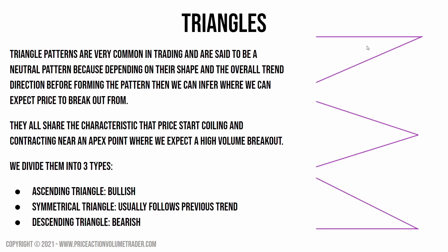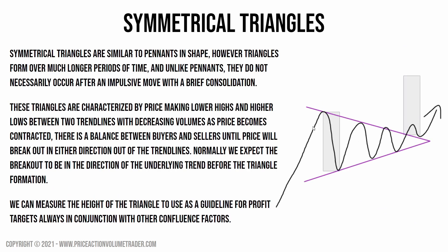The ascending triangle is bullish — price is coiling but forming higher lows while a resistance level is hit time and time again. In technical analysis, when a level is continuously hit over and over, that means it's getting weaker, so on an ascending triangle we expect a bullish breakout. Descending is the exact opposite: lower highs and a support level that keeps getting hit with a lot of sell pressure. The symmetrical triangle looks like two trend lines coming together at an apex — price just coils making lower highs and lower lows, and usually we have a follow-through in the direction of the previous trend.